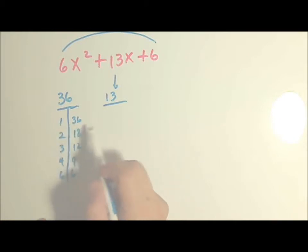But we only want the pair that add up to 13. It can't be 1 and 36 because that adds up to 37. It can't be 2 and 18 because that adds up to 20. 3 and 12 add up to 15. 4 and 9, that adds up to 13. And 6 times 6, while it multiplies to 36, it doesn't add to 13.